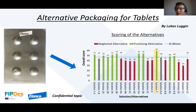Have you ever thought about how this packaging is called — the one you struggle with when using tablets? They are called blisters and they are widely used in the pharmaceutical industry. In my master thesis I have been evaluating different alternatives to the current aluminum blister, which is used in Elenco Animal Health, a global player in the animal health business.